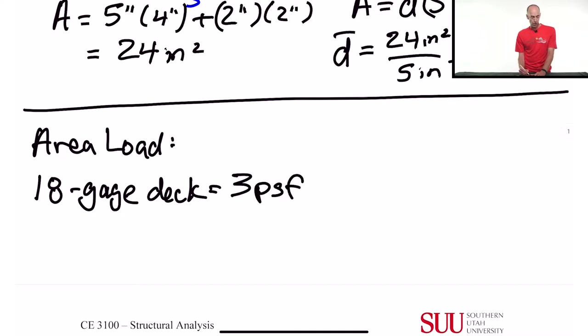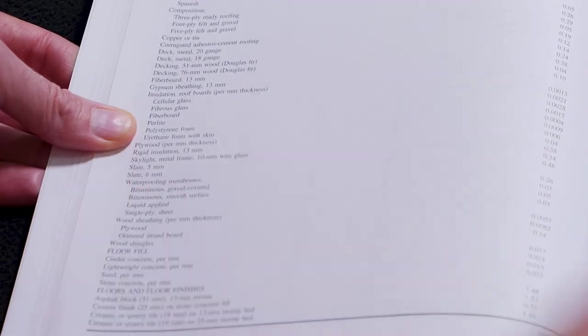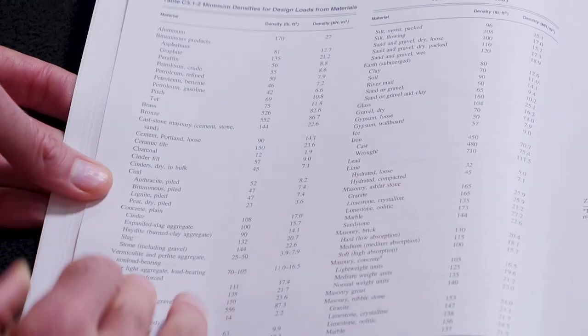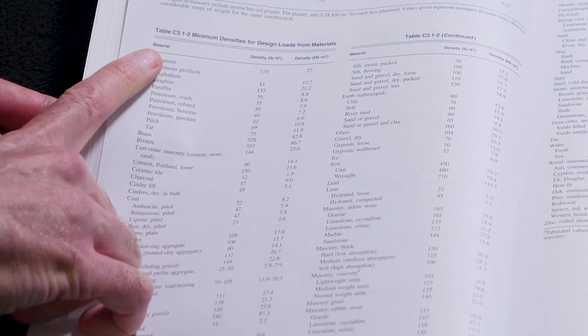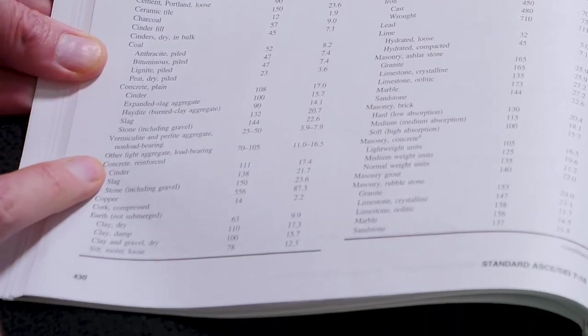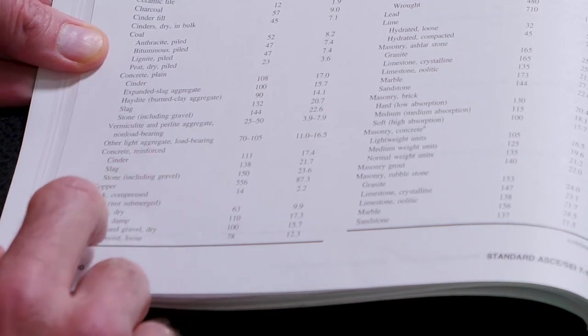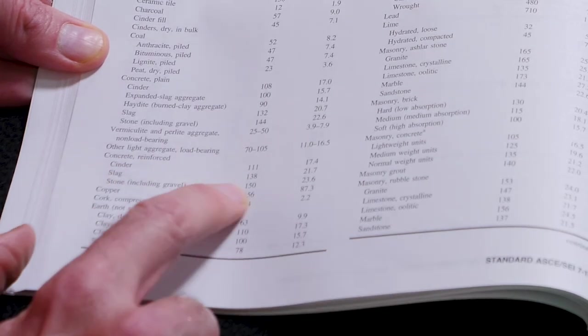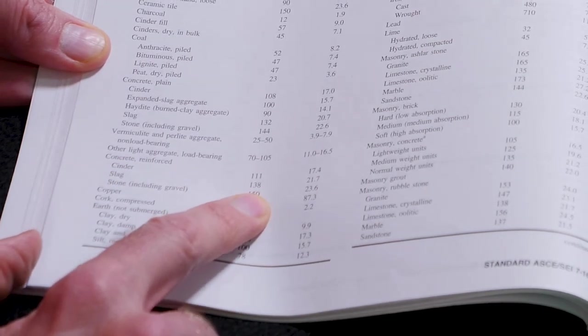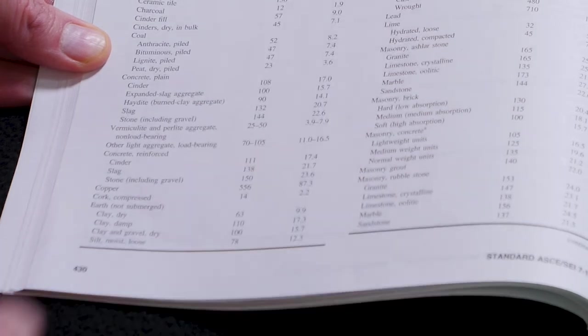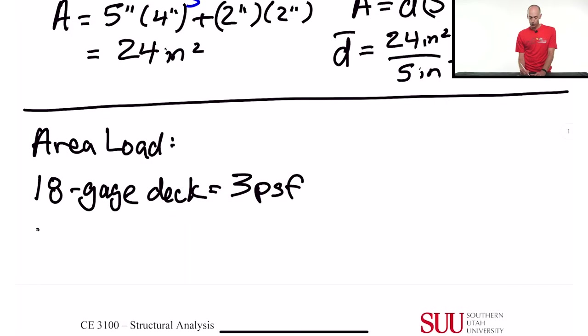For the concrete, we're going to use the density to figure out how much it weighs. The table has several types of concrete, but they're all unreinforced, so we can't use those directly. You flip over to another table that has densities for different types of material. Coming down to reinforced concrete with standard stone aggregate, you can see that's 150 pounds per cubic foot.